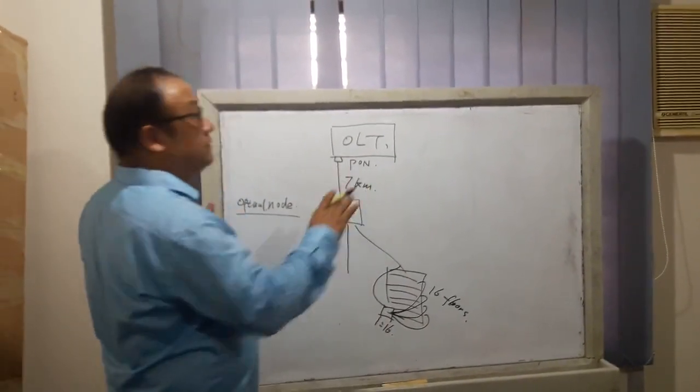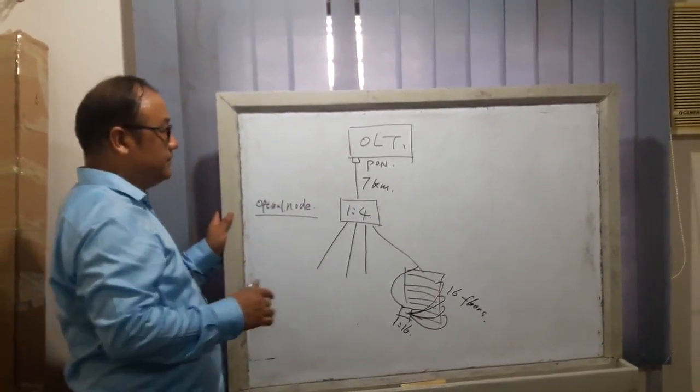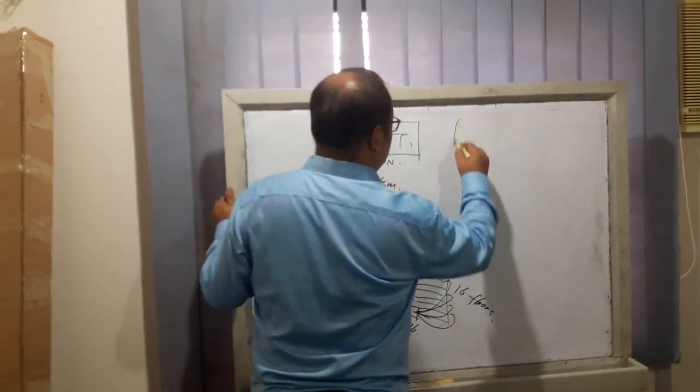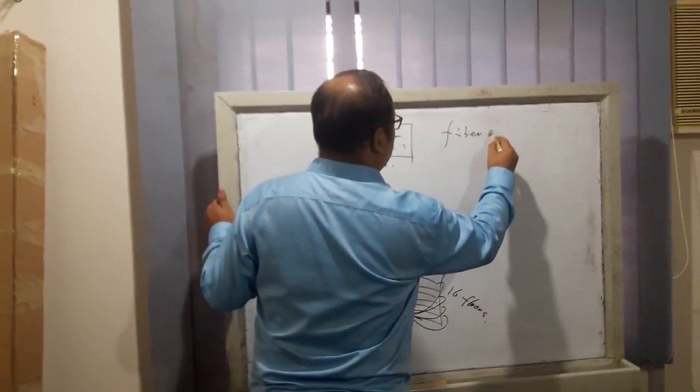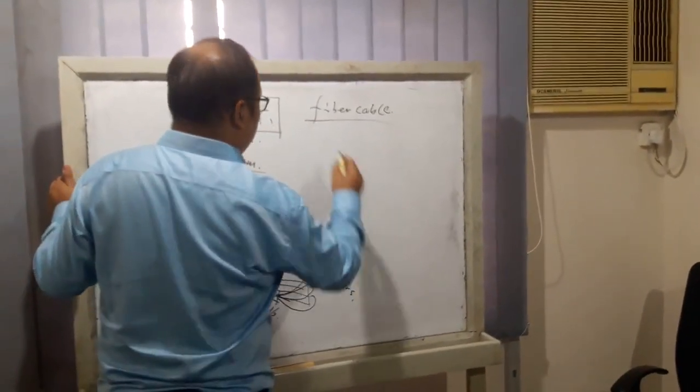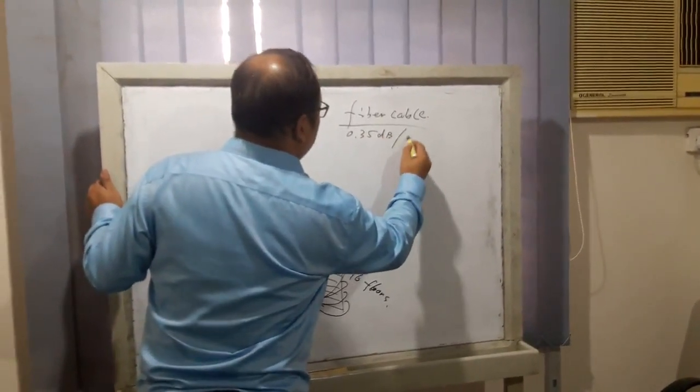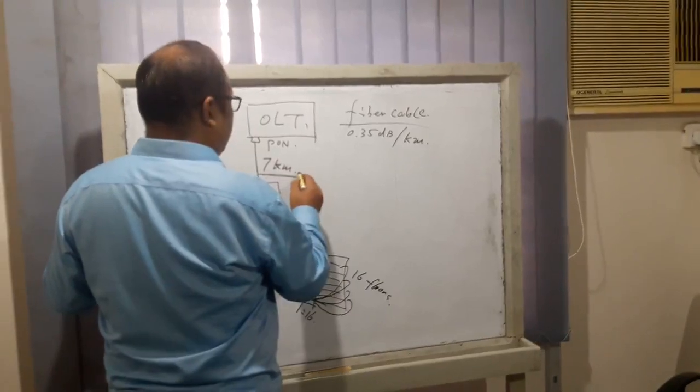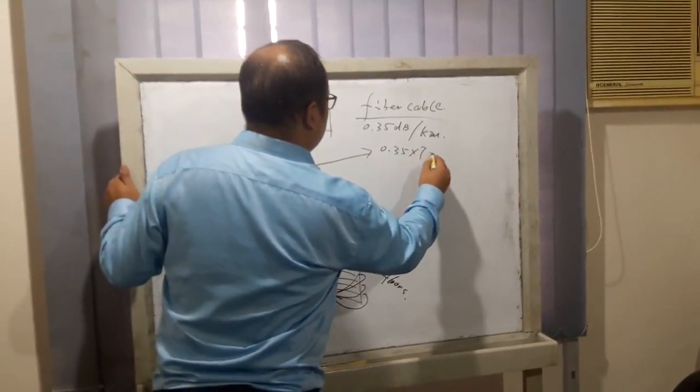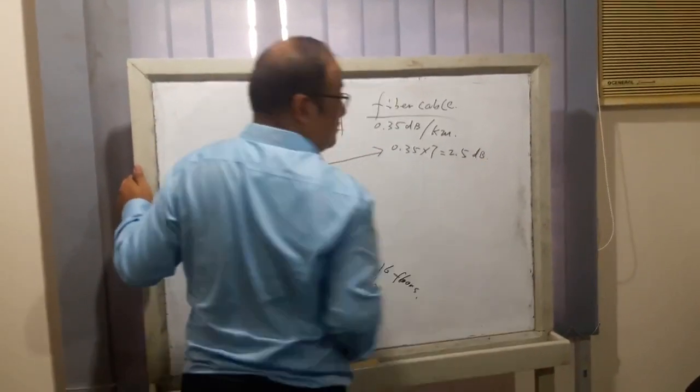Now we will account the attenuation of the whole distributed system. The first part is the fiber cable. As we know, the fiber cable dB loss is about 0.35 dB per kilometer. So 7 km is about 2.5 dB loss.